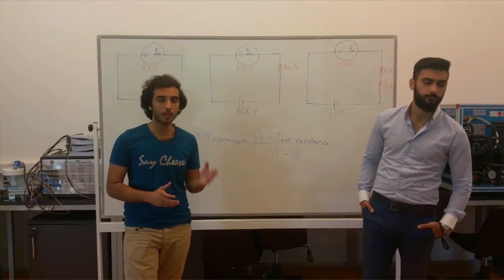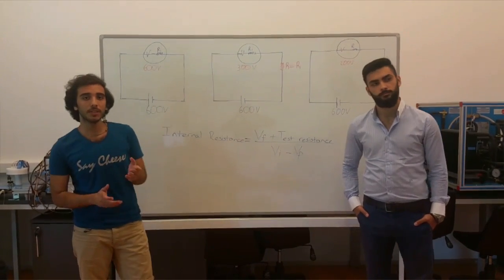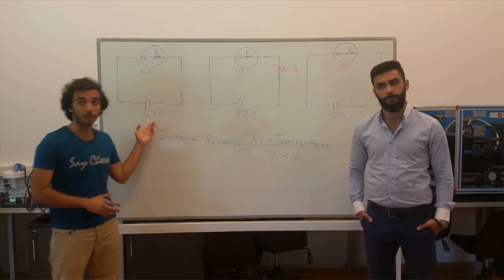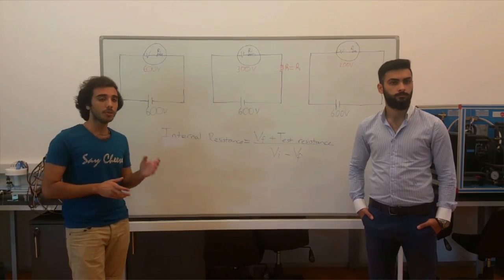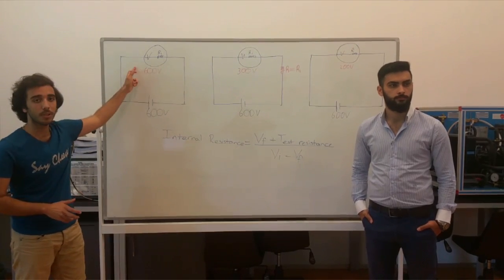For example, if you want to measure 600V, its internal resistors resist a part of the 600V. By that, the multimeter understands the voltage magnitude and shows 600V in the screen.